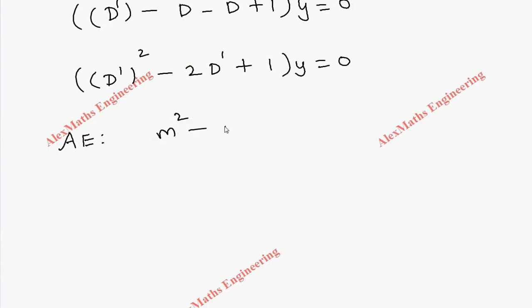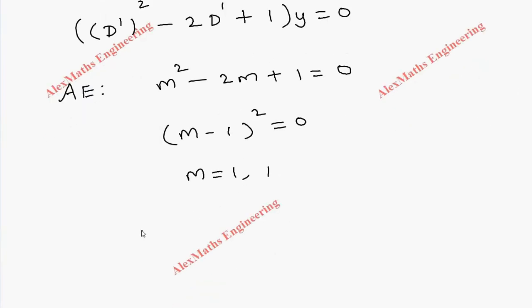Now we have to write the auxiliary equation where it is m² - 2m + 1 = 0. From this we get (m - 1)² = 0, and we get two values for m, both are 1.